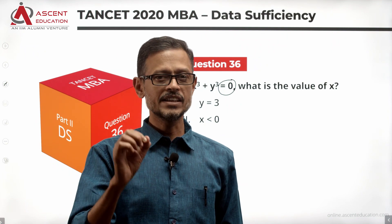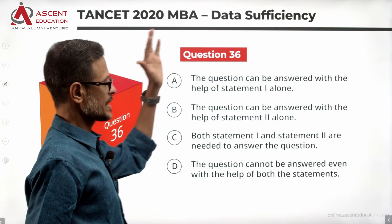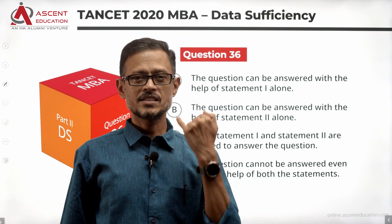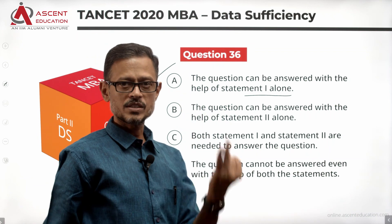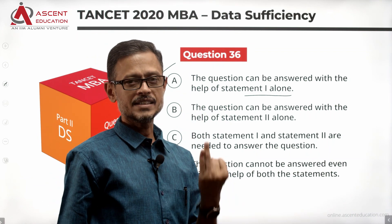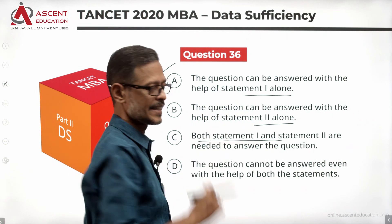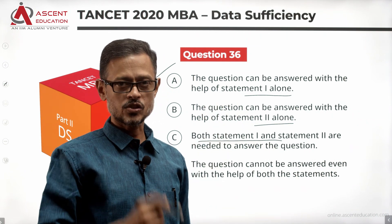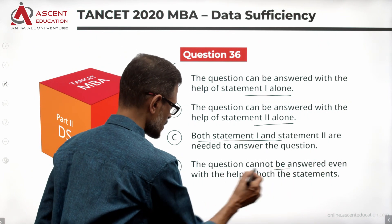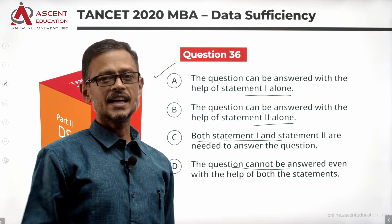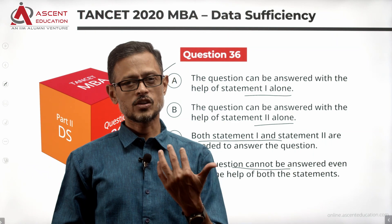So, what is the value of x? There are statements. Before we look at the statements, let's take a quick look at the four answer options. If statement 1 alone is sufficient, the answer is A. If statement 2 alone is sufficient, the answer is B. If statements 1 and 2 together are sufficient, the answer is C. If the statements are not sufficient to answer the question, the answer option is D.